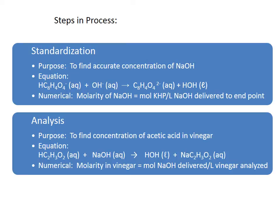The steps in this process are really two-fold. You'll be supplied with a sodium hydroxide solution, and our goal at first will be to find out what its actual concentration is — fairly accurately, known to four decimal places. That process is called standardization. The second part: we'll use that sodium hydroxide whose concentration we now know to find out what the concentration of acetic acid is in vinegar.